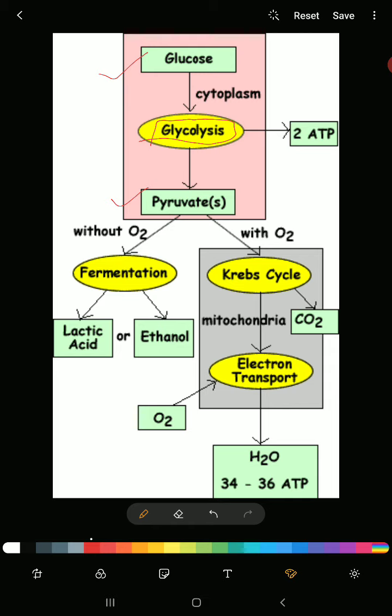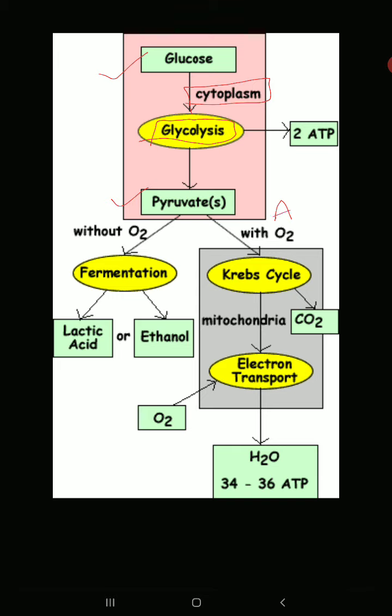Glycolysis, also known as the EMP pathway, takes place in the cytoplasm of the cell. After glycolysis, glucose is converted to pyruvic acid through two possible pathways depending on oxygen availability: if oxygen is present, the pathway is aerobic respiration; if oxygen is absent, the respiration is anaerobic.